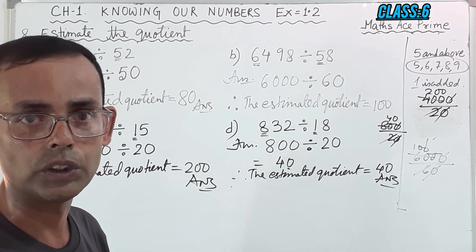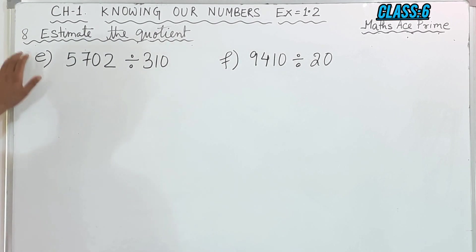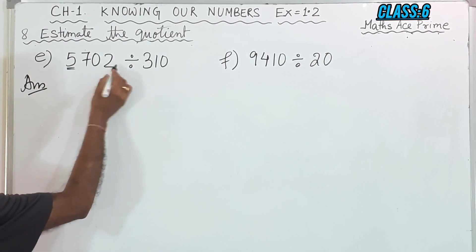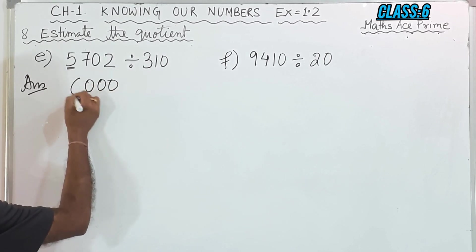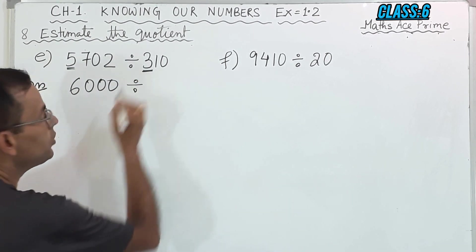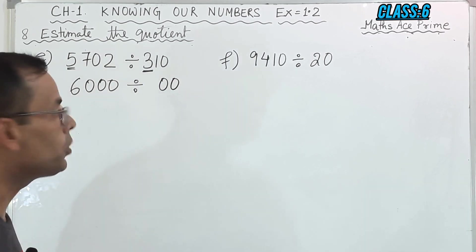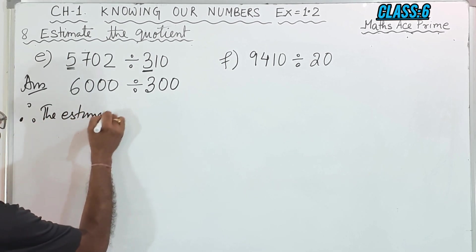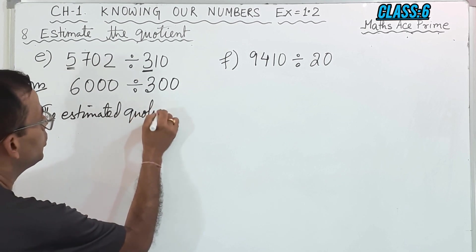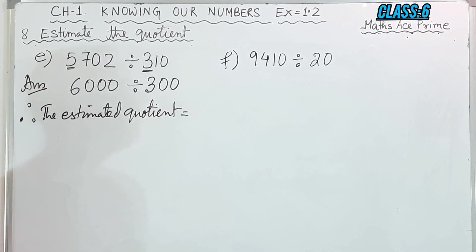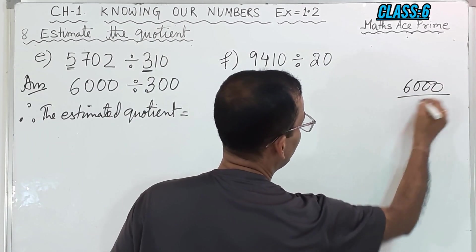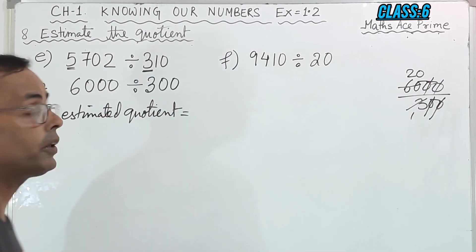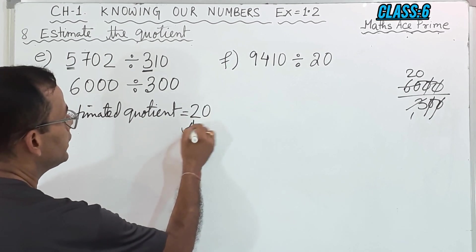Now we will move on to question number 8E. We will round off here. For these digits I will put 0, 0, 0, and 5 will become 6, giving 6,000. Divided by — round off here: the rest digits become 0 and this will be 3 only, so 300. Therefore the estimated quotient: 6,000 divided by 300. Cancel the zeros: 3, 2's are 6. So you get 20. And this is the answer.